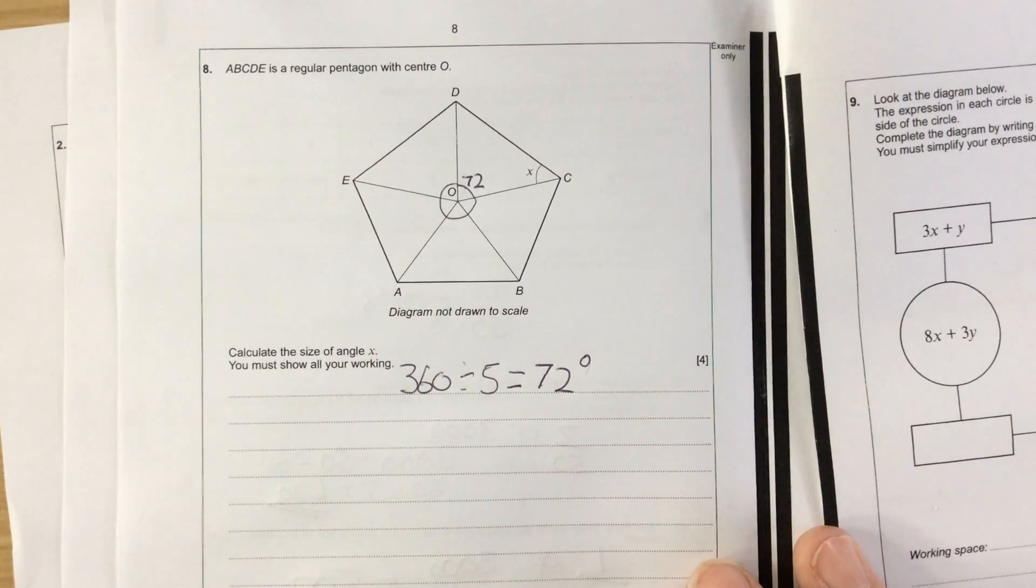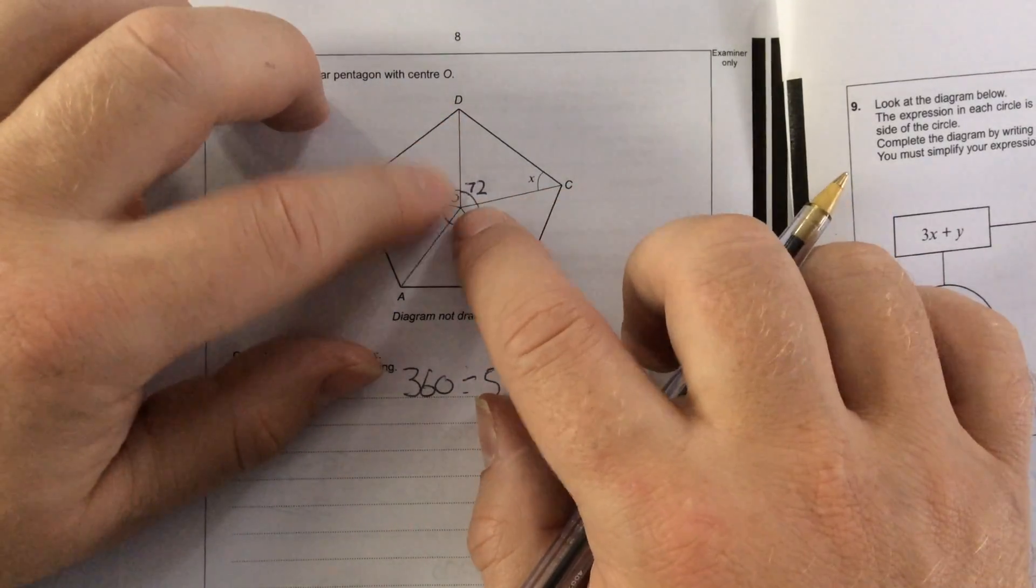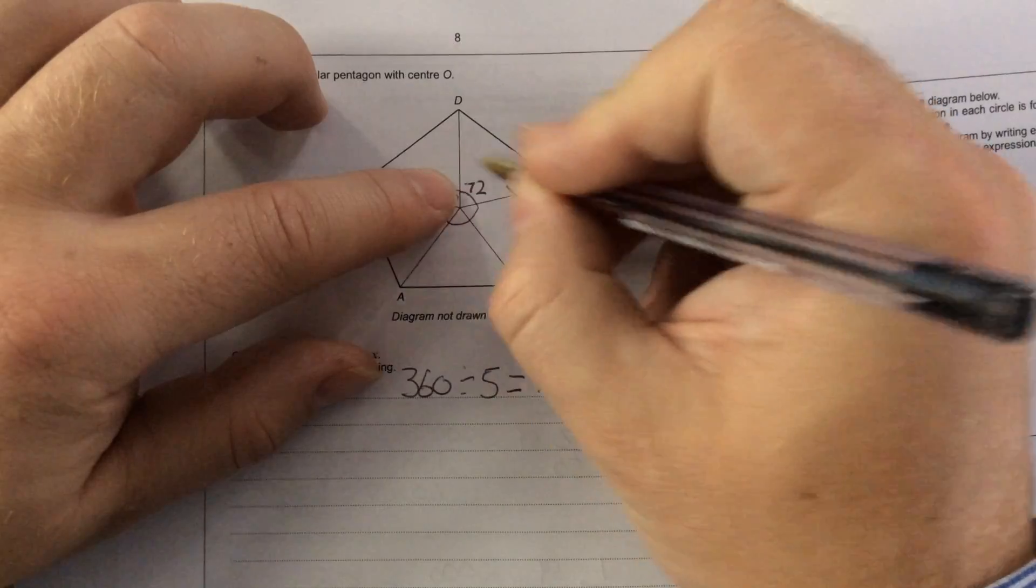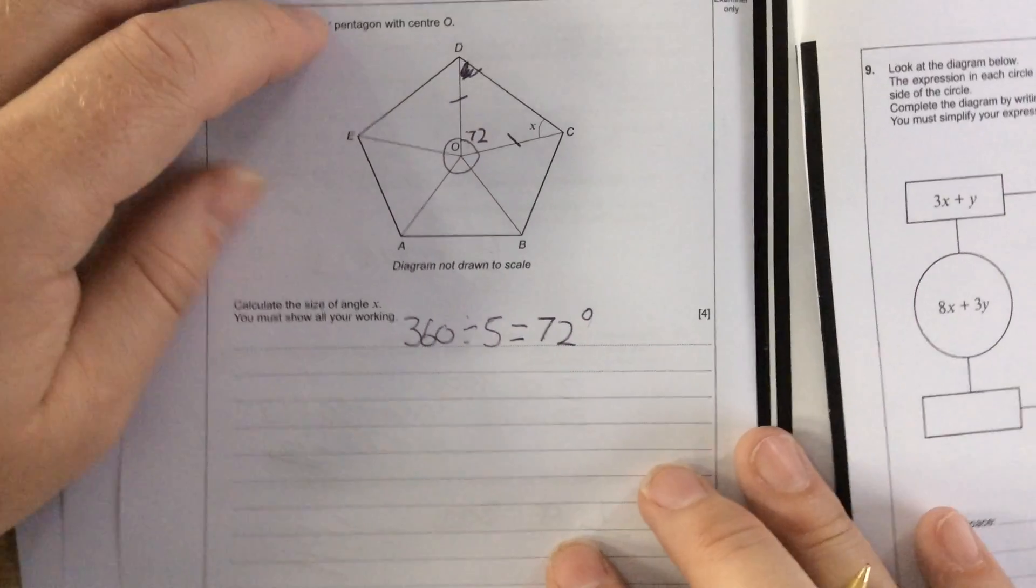So when that's a triangle here, it makes 72 degrees. Because the lines joining the corner point to the centre are both the same, these two lengths are exactly the same, which means that this angle and X are exactly the same.